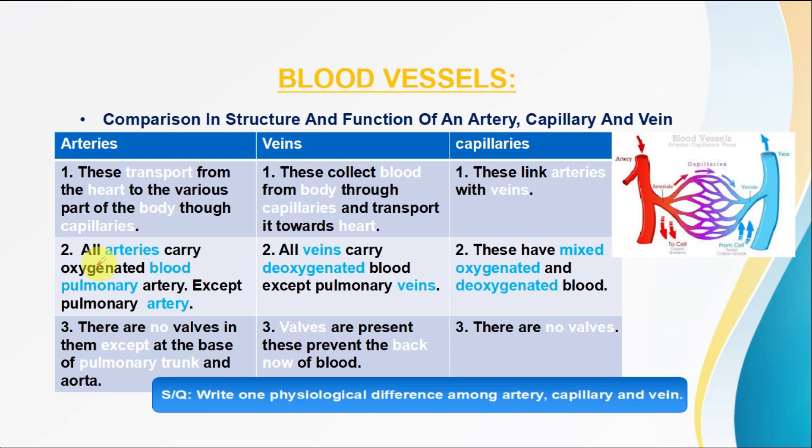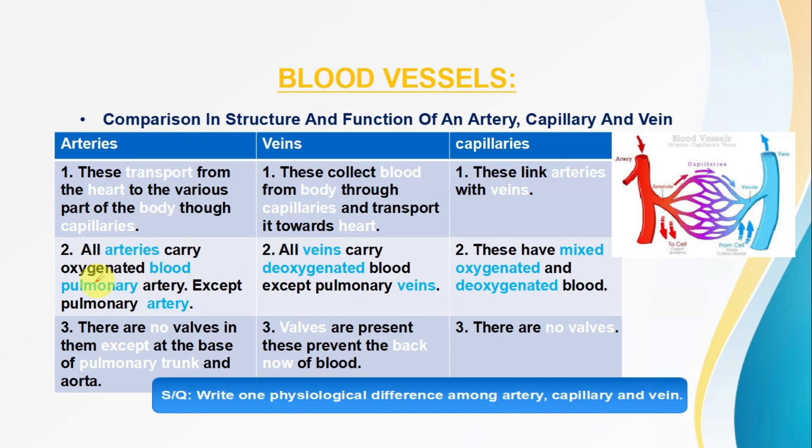Regarding the type of blood: all arteries carry oxygenated blood. However, there is one exception — the pulmonary artery, which carries deoxygenated blood.